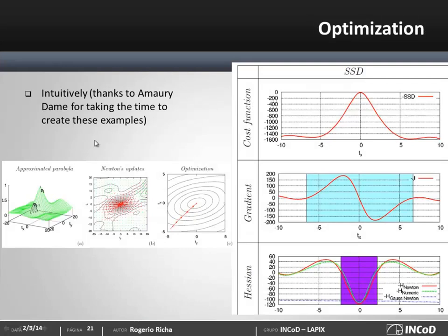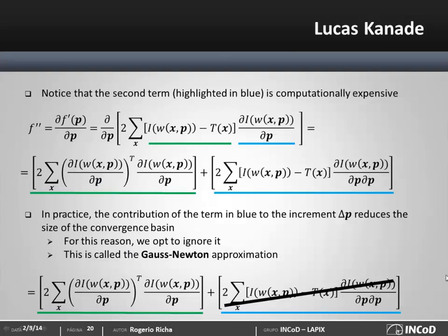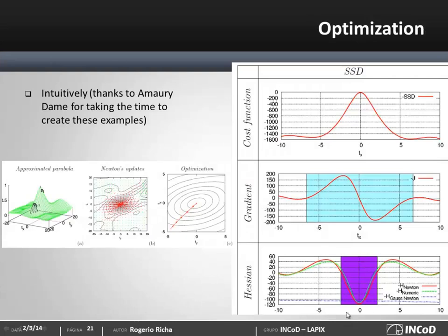More intuitively, here is an example from the PhD thesis of Marie Dame, who made very interesting illustrations that help visualize the effect of the Gauss-Newton approximation on the convergence basin. In this 1D example, the negative of the SSD is plotted, turning it into a maximization problem. The size of the convergence basin using the Gauss-Newton approximation is shown in blue, whereas including the second term in the Hessian computation shows a dramatic reduction in the size of the convergence basin, due to the shape of the second derivative.